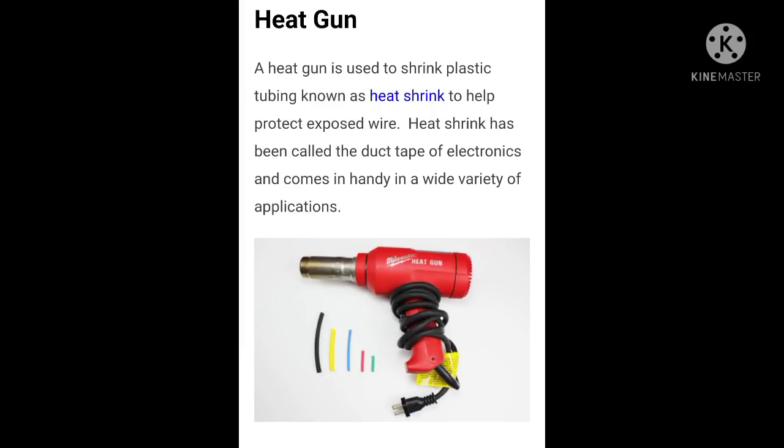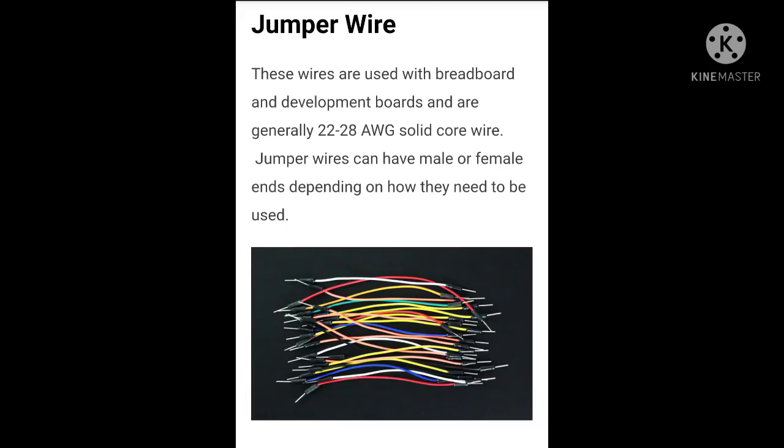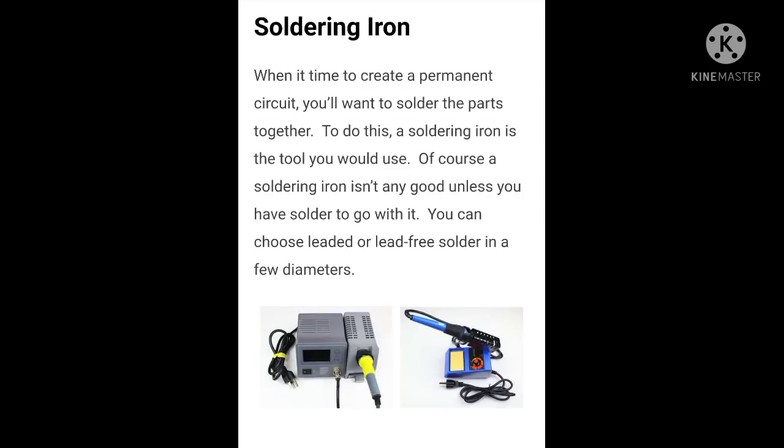Heat gun — a heat gun is used to shrink plastic tubing known as heat shrink, to help protect exposed wire. Jumper wires — these wires are used with breadboards and development boards and are generally 22 to 28 AWG solid core wires.